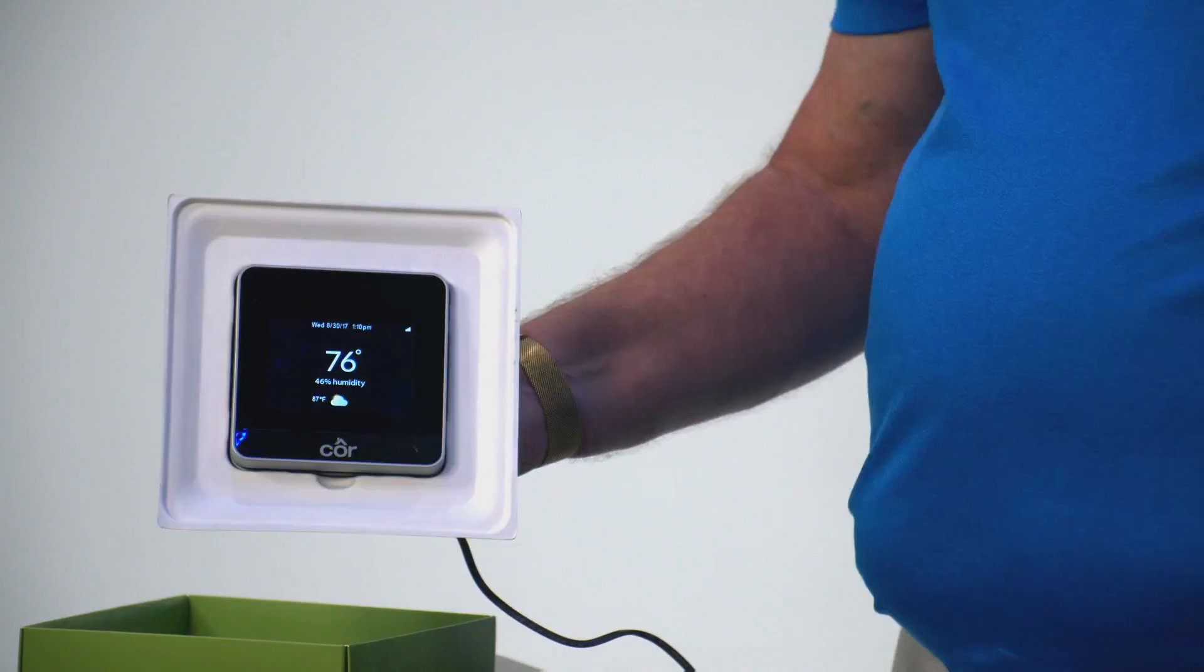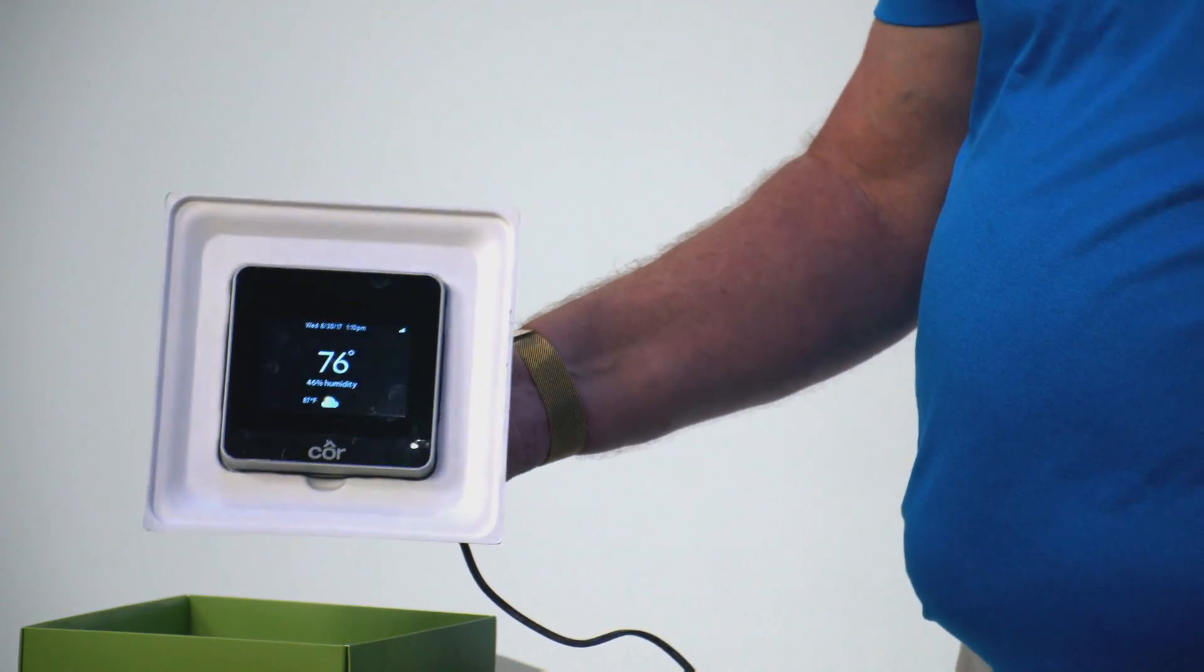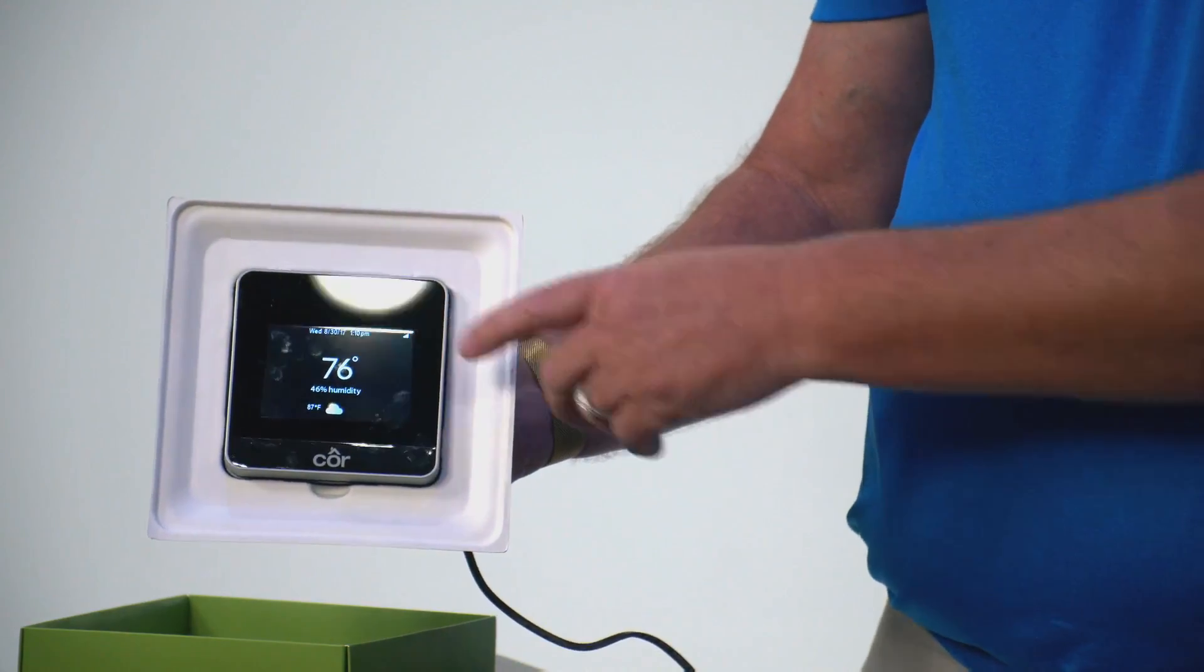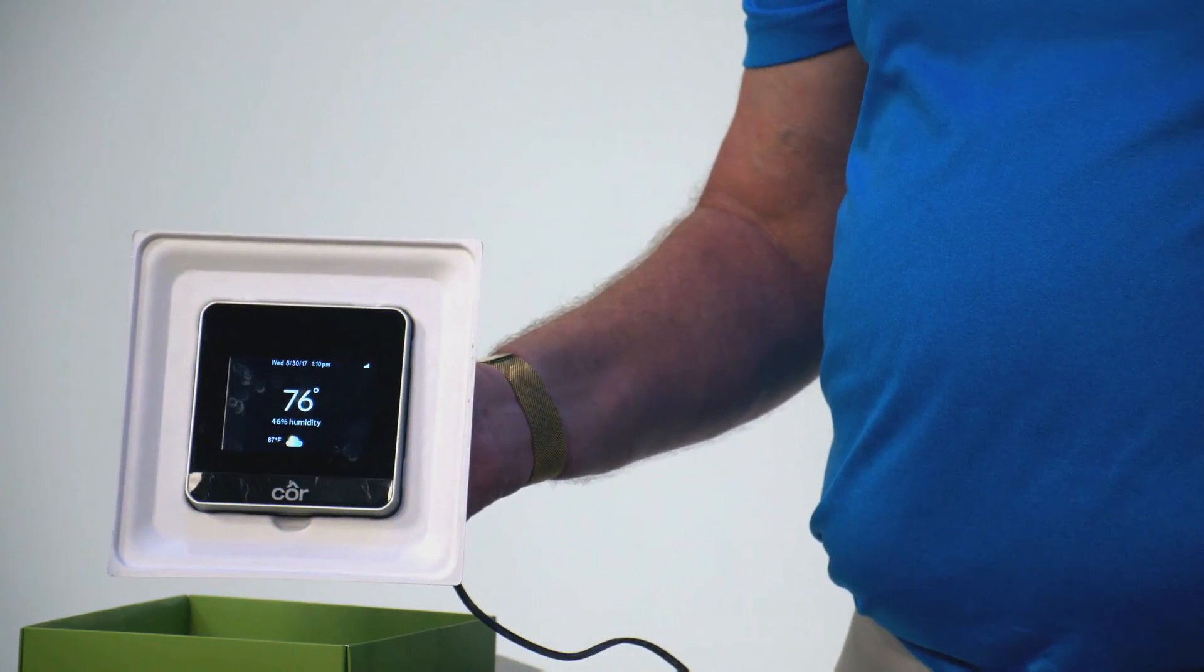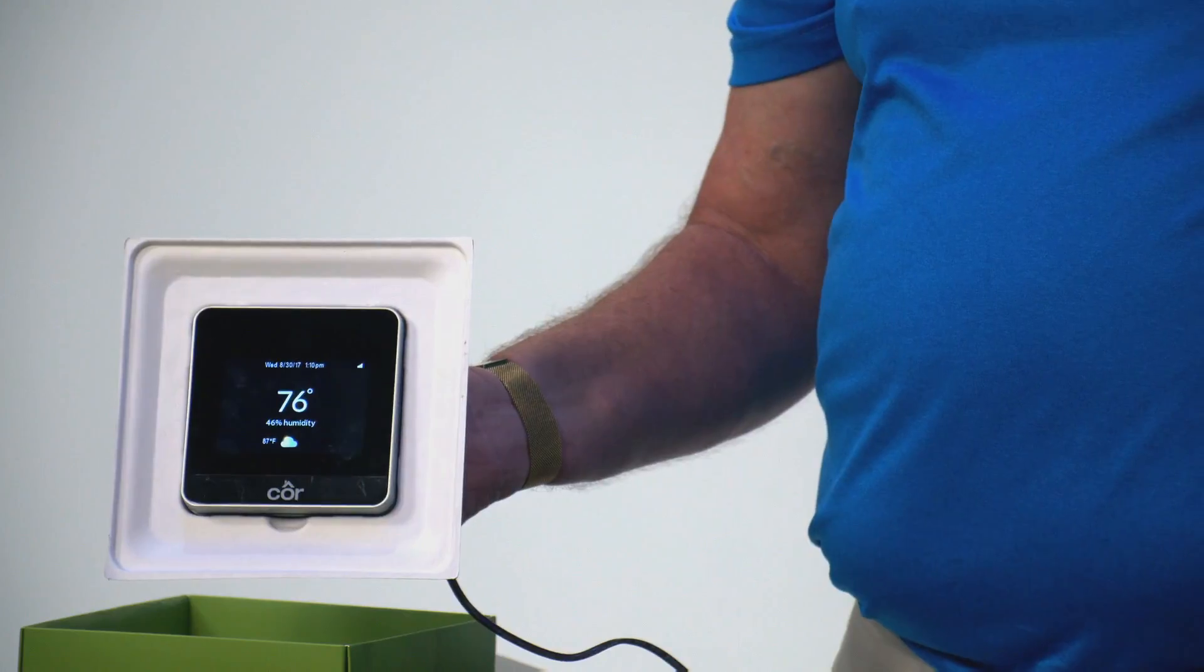And then this is just a normal screen that we have. As long as you don't see a red line through that, you have a good Wi-Fi connection. And again, that's one of the most important things is making sure your Wi-Fi is connected.